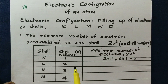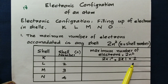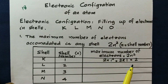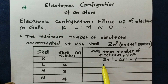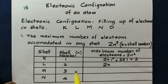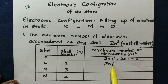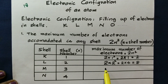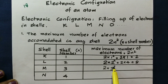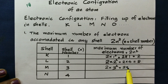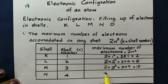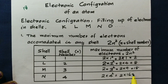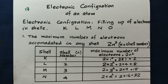The maximum number of electrons in the first shell (K) is 2. For L shell: n=2, so 2 into 2 squared equals 2 into 4, that is equal to 8. For M shell: n=3, so 2 into 3 squared equals 2 into 9, that is equal to 18. For N shell: n=4, so 2 into 4 squared equals 2 into 16, that is equal to 32.